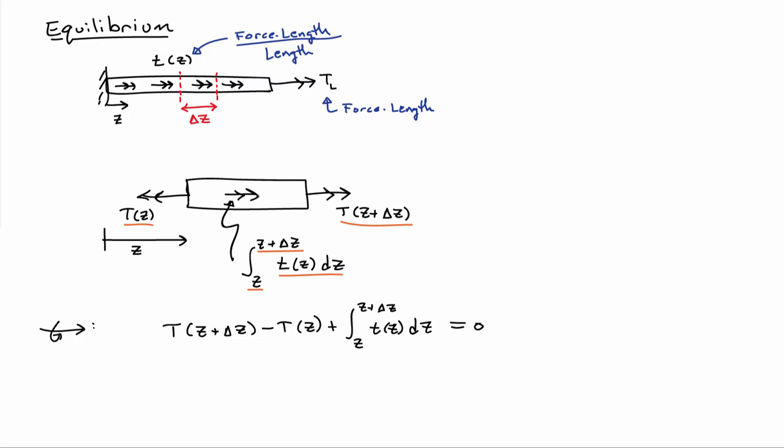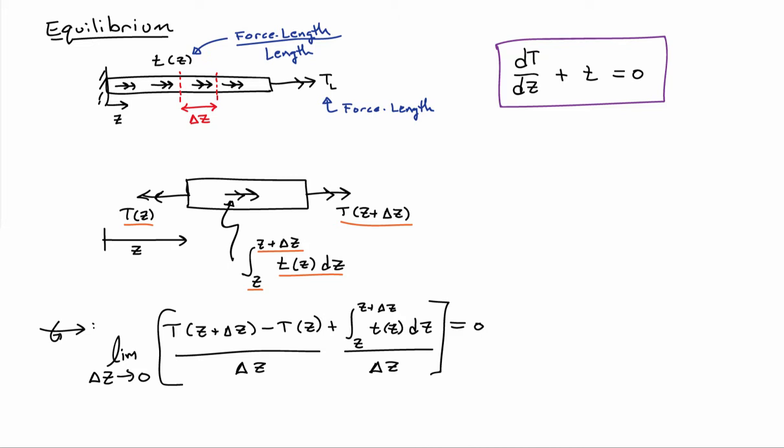So I can sum the torques about the z-axis. I'll have T of z plus delta z minus T of z plus this integral of little t from z to z plus delta z. So that's my equilibrium equation. Now we can play the usual game that we've been doing so far. Let me divide through by delta z and then take the limit as delta z goes to zero. The first term is going to become the derivative.